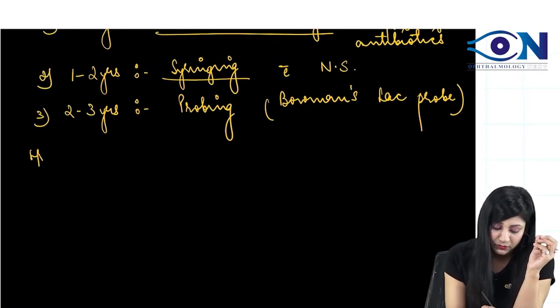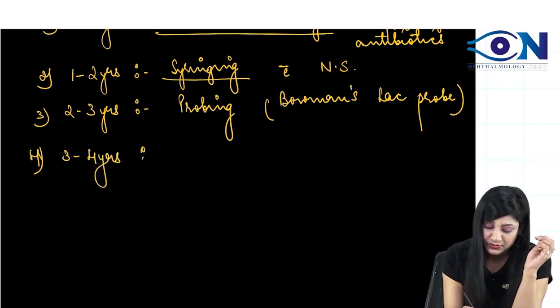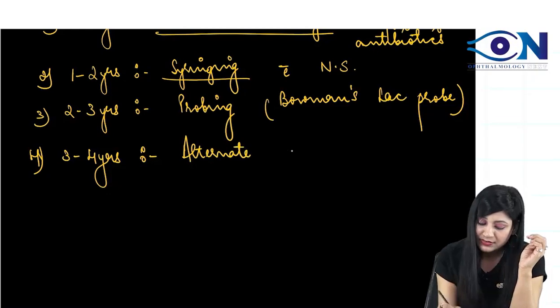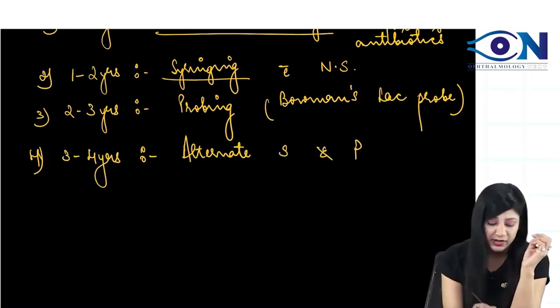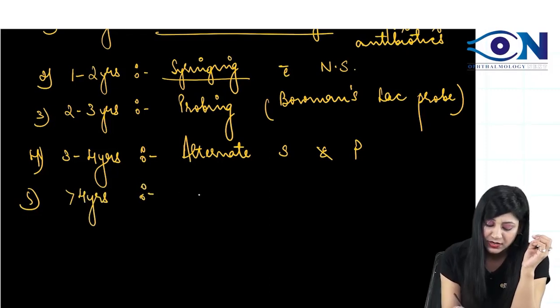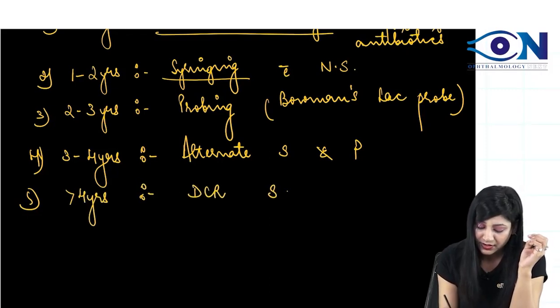Then we come to between 3 to 4 years. Between 3 to 4 years, we can do alternate syringing and probing. And finally, after 4 years of age, we can do the DCR surgery.